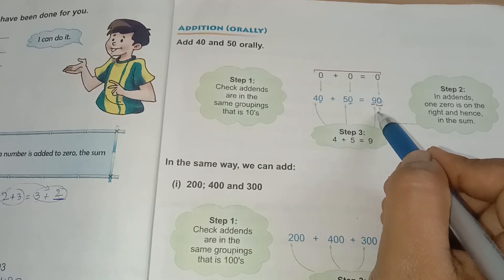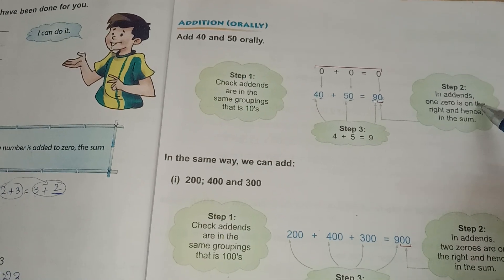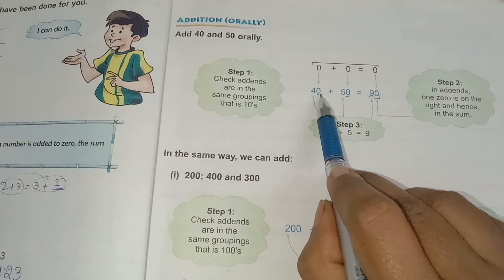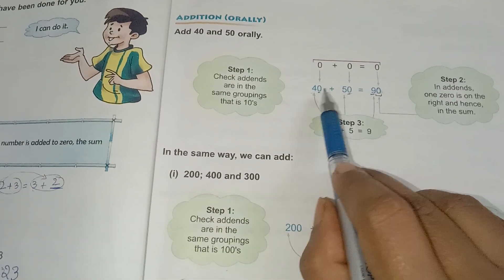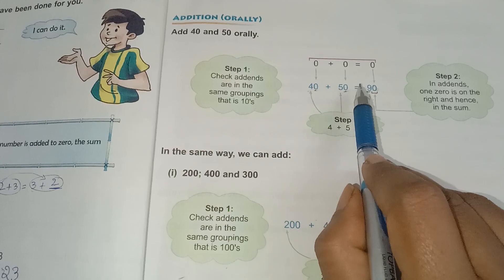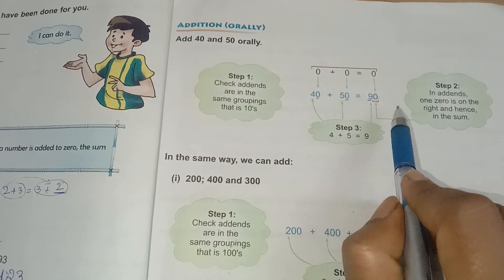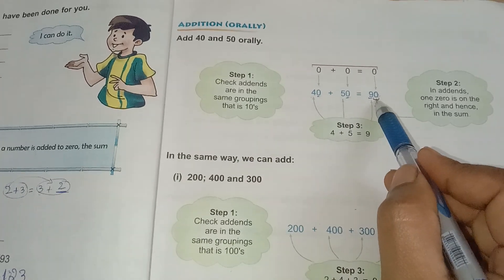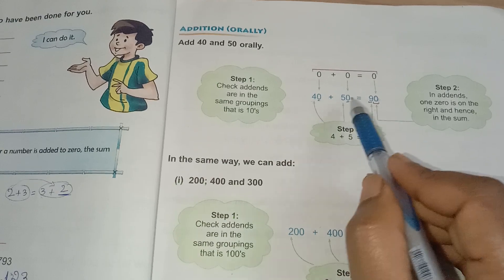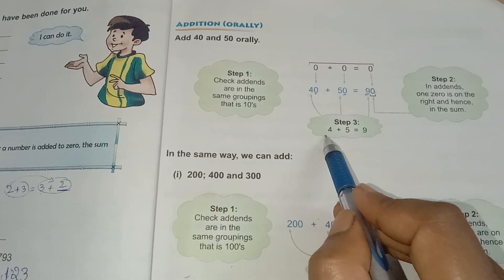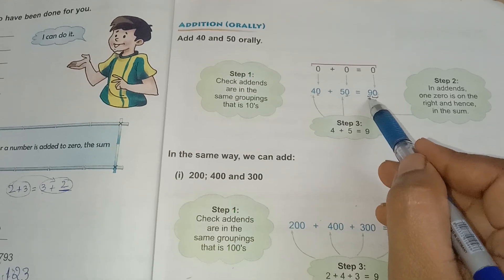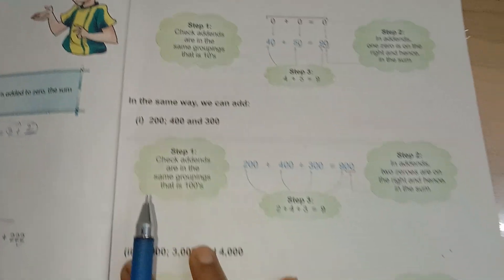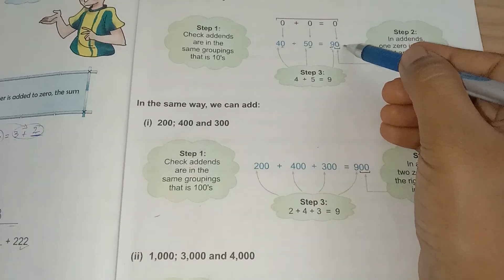In the addends, there is a 1 and 0 — each addend ends in 0. So I will write 0 in the ones place first, then add the tens digits: 4 plus 5 is 9. I write 9 in the tens place. That means 40 plus 50 is 90. If the addend is 10, I write 10 here.